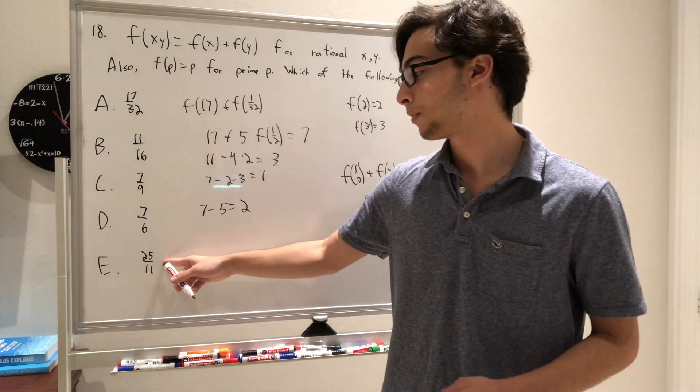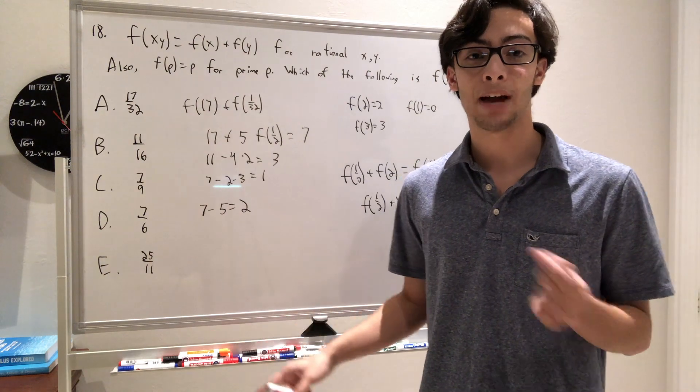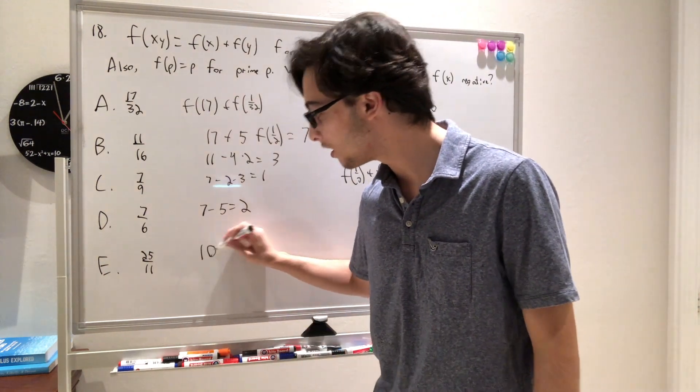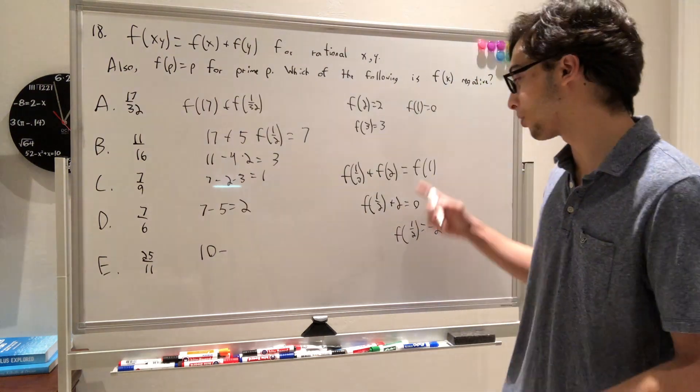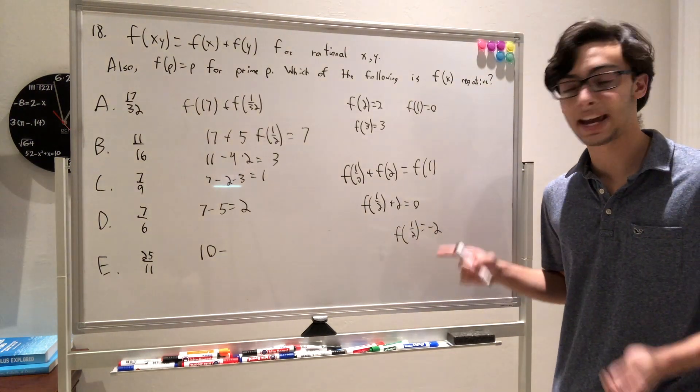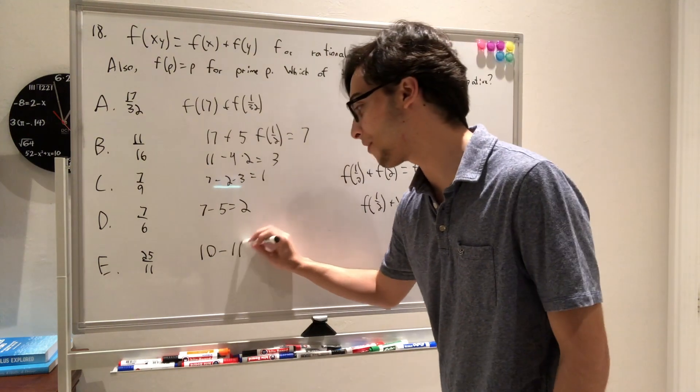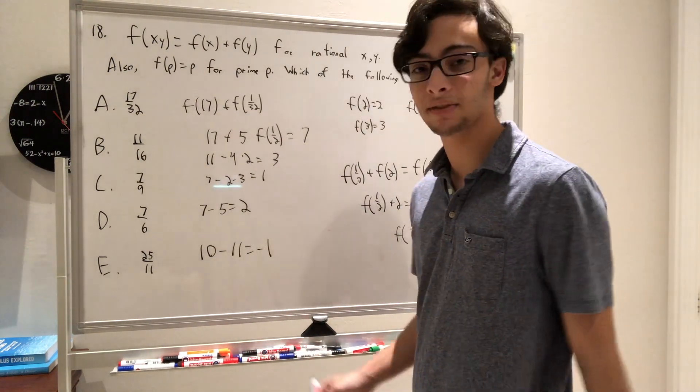We have f of 25 is going to be 2 times f of 5, and f of 5 is 5, so this is going to give us 10 plus f of 1 eleventh, but by a similar reasoning, f of 1 eleventh is going to be negative 11. So we have 10 minus 11, which equals negative 1, which is indeed negative, so our answer is e.